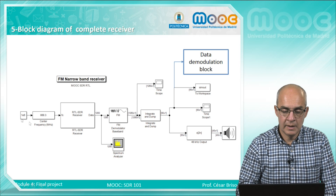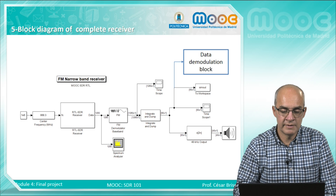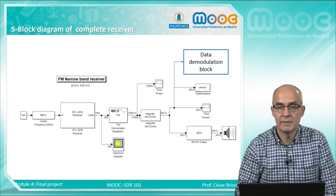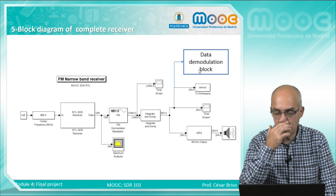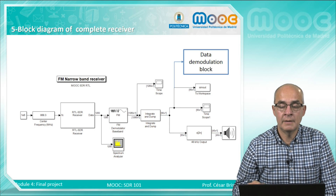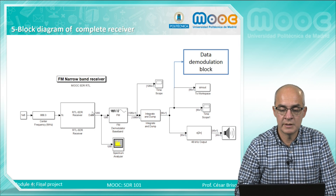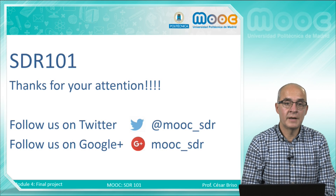You have to record the data and tune the demodulator and receiver to your remote control. Then you can either process the data in a MATLAB application, or if you are a more advanced user, you can include the demodulation block with clock recovery and data recovery and process everything with Simulink blocks. That's all — thanks for your attention.